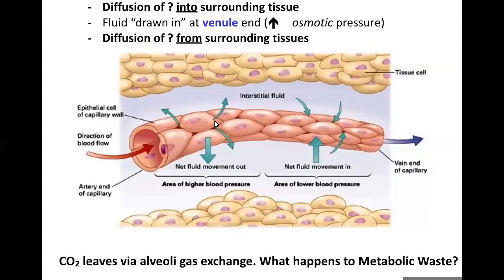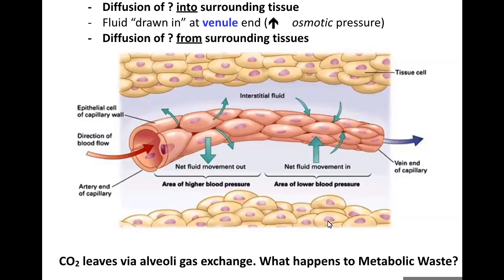When we last left you with the blood vessels, there was blood flow going through those capillary beds. The arterial pressure was forcing out fluid, glucose, and oxygen through diffusion based on concentration gradients. By the end of that capillary bed, fluid was being drawn back in, along with carbon dioxide and metabolic waste produced by the surrounding cells. We know how we get rid of CO2 through the lungs, but all this metabolic waste — we have to get rid of that too.